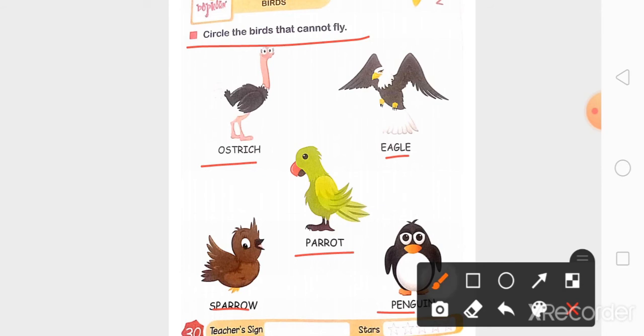तो कौन से birds उड़ नहीं सकते हैं? Yes, Ostrich and Penguin. अब बाकी के सब अच्छे से fly कर सकते हैं.